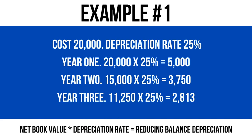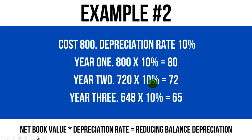Does that make sense? If not, let me know in the comments below — I'm here to help. Example two: an asset costs 800 and the depreciation rate is 10%. Year one is 800 by 10%. You might think that's cost price by depreciation rate, but it just happens that in year one the net book value equals the cost price because there's been no accumulated depreciation yet. So year one: 800 times 10% equals 80 depreciation. Net book value for year two is 800 minus 80 equals 720. 720 times 10% equals 72. Year three: 648 net book value times 10% gives us 65 depreciation.